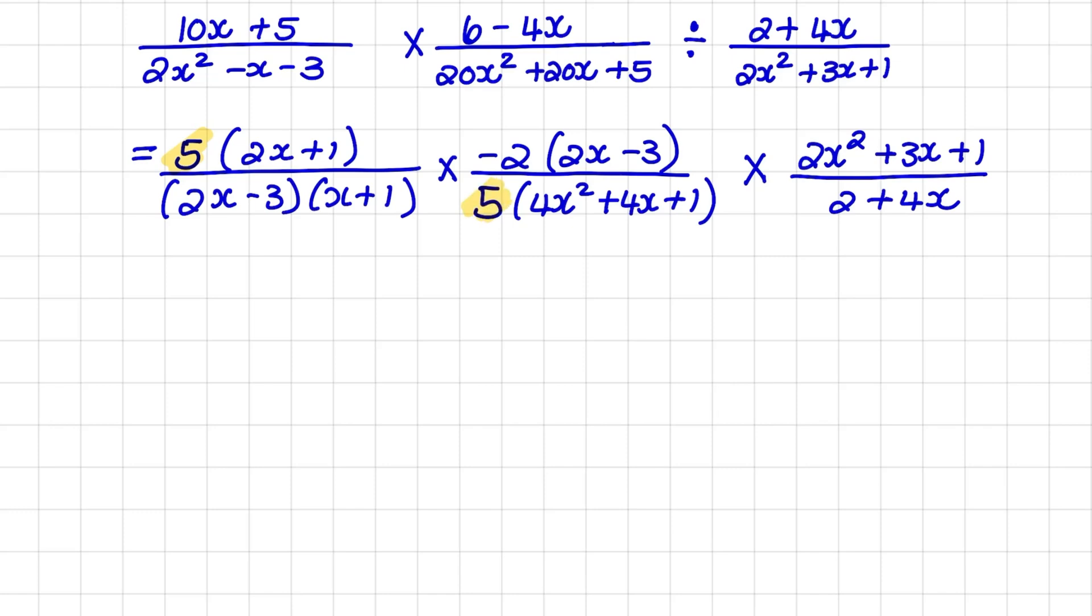I also noticed there is a set of brackets, which is 2x minus 3, which will cancel one another out. So that will lead to a simplified first fraction of 2x plus 1 over x plus 1.